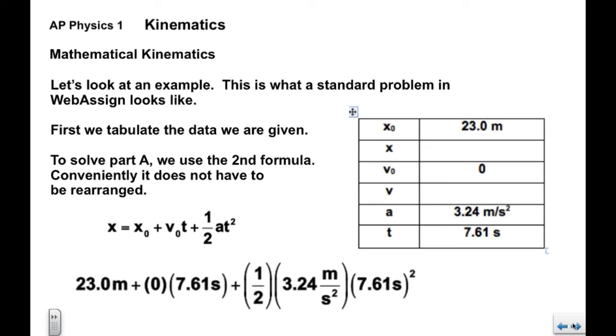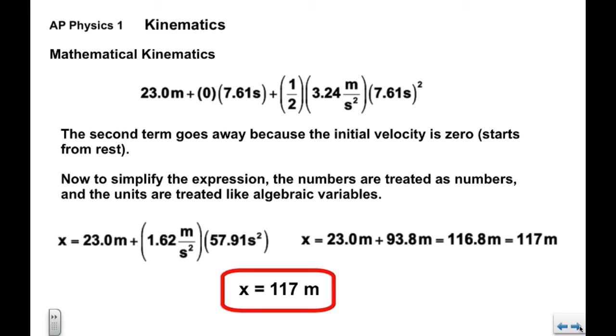In order to solve part a, we're going to use the second formula. Conveniently it doesn't have to be rearranged. We have x equals x0 plus v0 t plus one half a t squared. We're going to put the data in. Now what we need to do is simplify this somewhat complicated expression down to a single number and a single unit. We can see right away this term v0 t goes away because the initial velocity is zero because it starts from rest, so this term goes away.